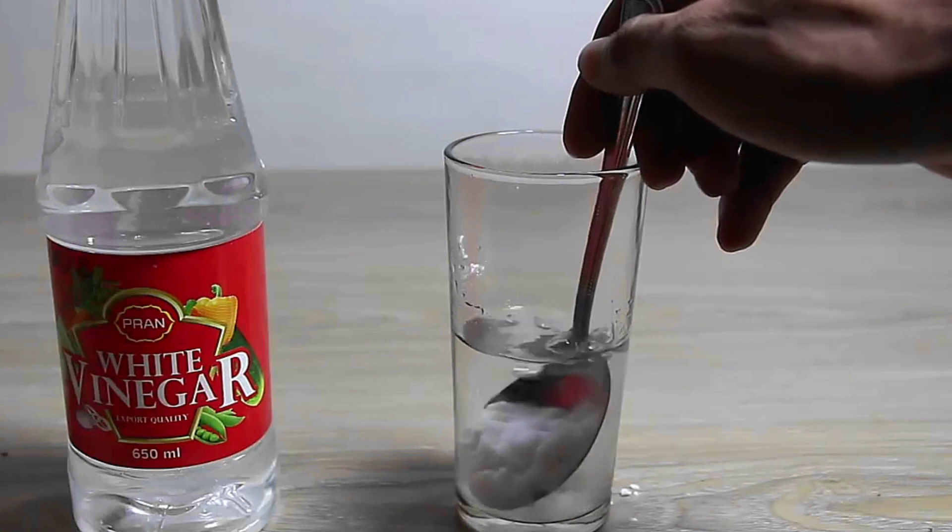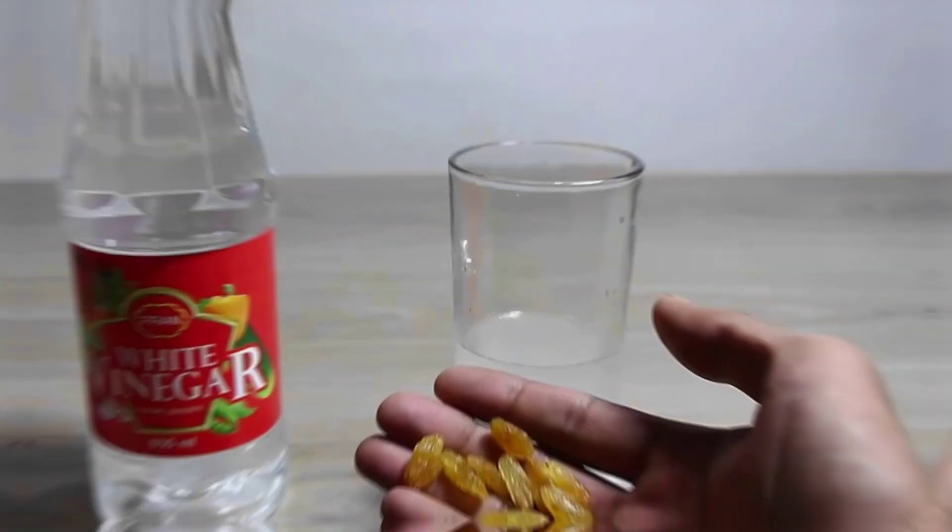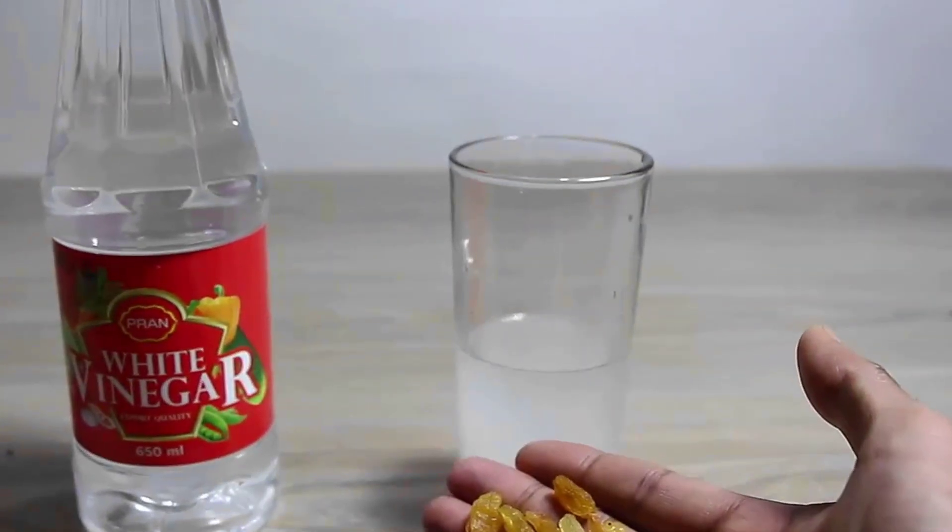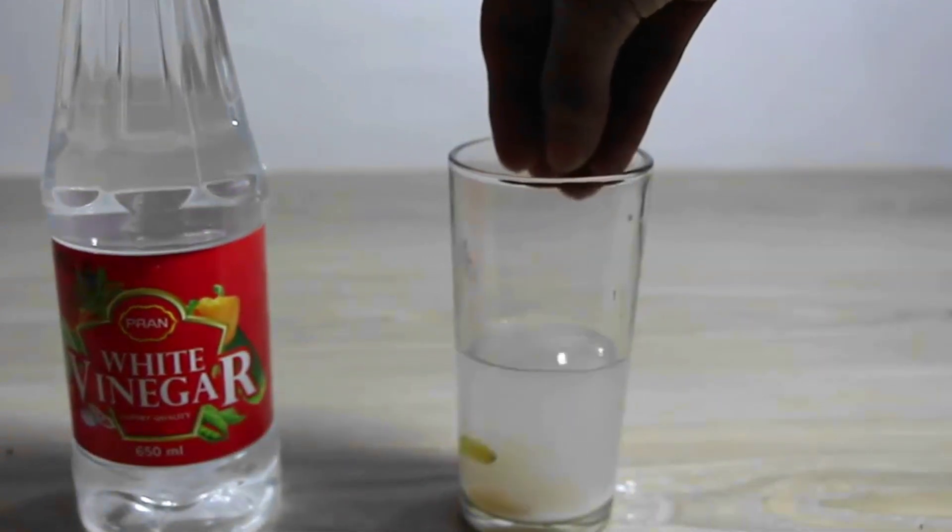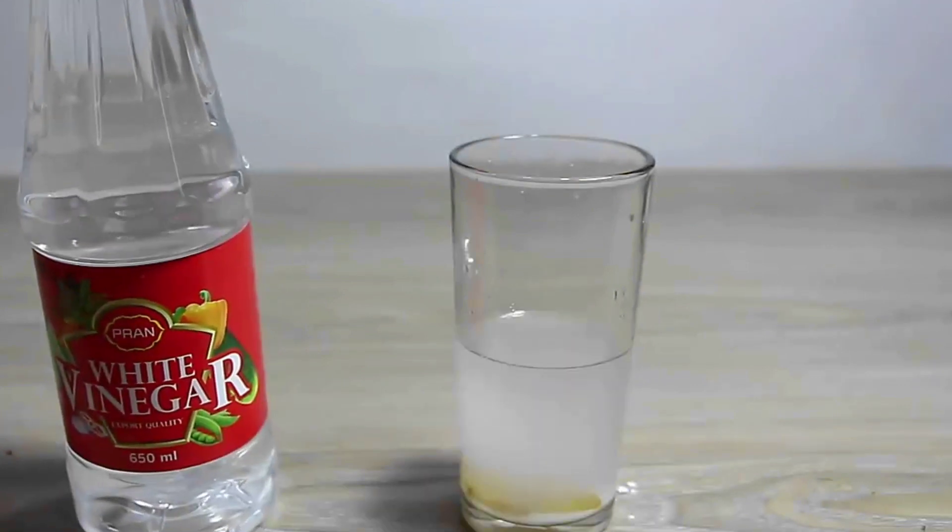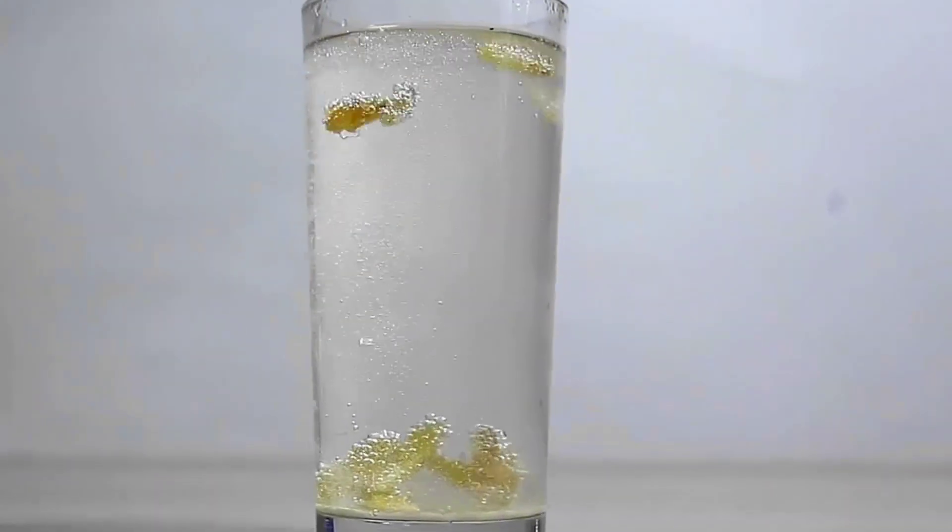Fill the glass about halfway with the carbonated soda. Next, drop a few raisins into the soda and observe what happens. The raisins will sink to the bottom at first, but after a few moments, they will start to rise and fall, seemingly dancing in the soda.